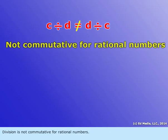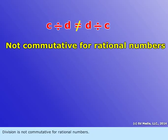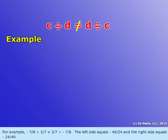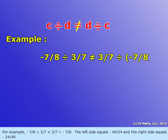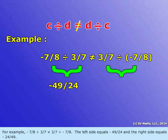Division is not commutative for rational numbers. For example, negative seven-eighths divided by three-sevenths is not equal to three-sevenths divided by negative seven-eighths. The left side equals negative forty-nine divided by twenty-four, and the right side equals negative twenty-four divided by forty-nine.